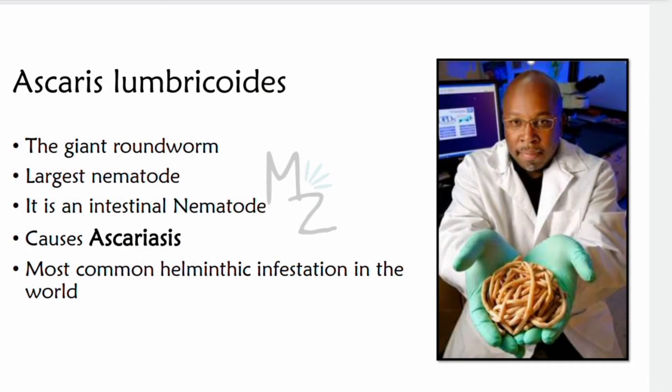Ascaris Lumbricoides. It is also known as a giant roundworm. It is the largest nematode, measuring about 25 cm. It is an intestinal nematode responsible for causing ascariasis. It is the most common helminthic infestation in the world. In the picture, you can see Ascaris Lumbricoides in the hands of a person.